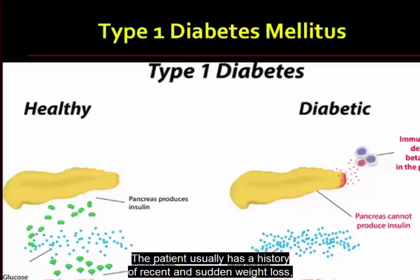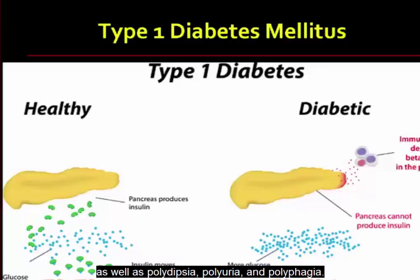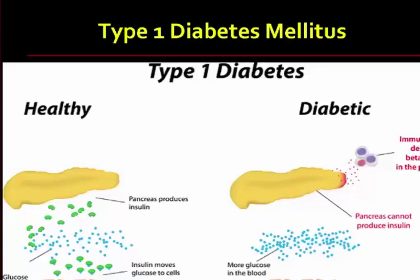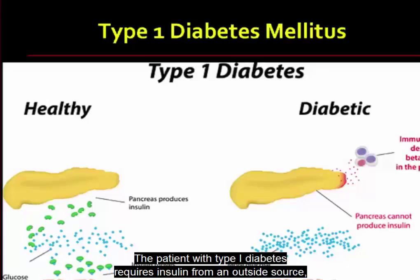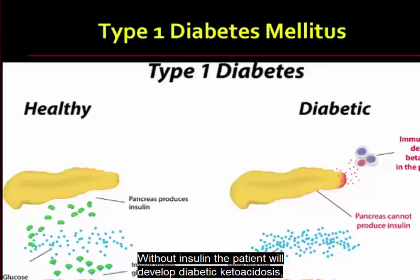The patient usually has a history of recent and sudden weight loss as well as polydipsia, polyuria, and polyphagia. The patient with type 1 diabetes requires insulin from an outside source, known as exogenous insulin, in order to sustain life. Without insulin, the patient will develop diabetic ketoacidosis, which is a life-threatening condition resulting in metabolic acidosis.